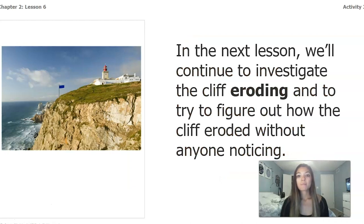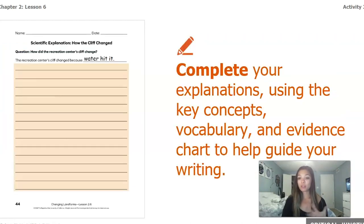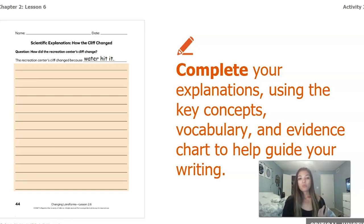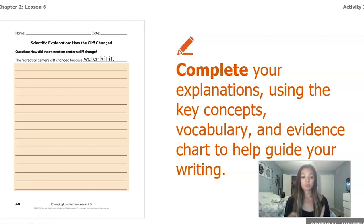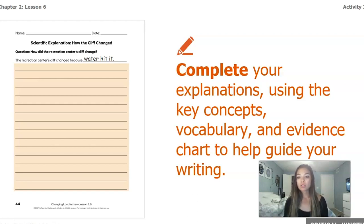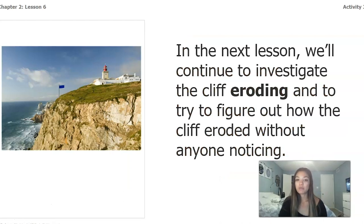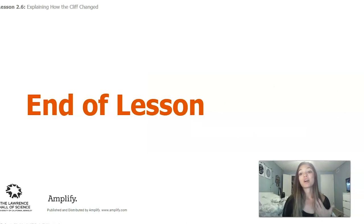I'll give a couple of ideas to help you think on your own. We know water can change a landform — in our readings we investigated landforms that included water, whether frozen or not, such as glaciers and rivers changing valleys. When water hits our landforms, erosion is happening, things are breaking down, and that changes the shape of our landform. In the next lesson we're going to continue investigating the cliff eroding and figure out how it eroded without anybody noticing. That's the end of chapter two — I look forward to meeting back up for chapter three!